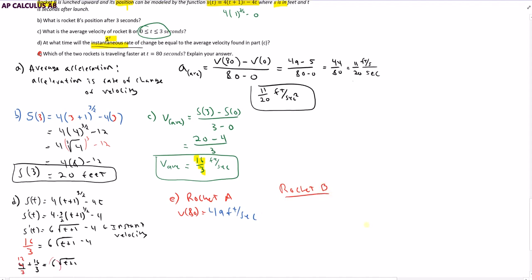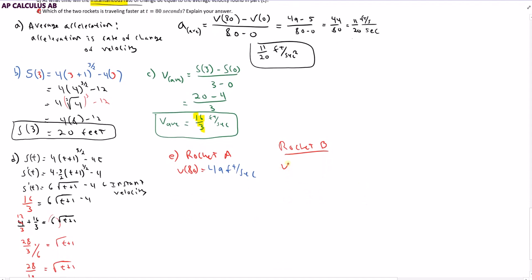How do I figure out the velocity for rocket B? Well, I use the velocity function. I should put a little A down here, velocity of rocket A. Velocity of rocket B at time T is that derivative thing we had, which was 6 square root of (T + 1) minus 4. And at 80, it's going to be 6 square root of 81 minus 4, which is 6 times 9 minus 4, which is 54 minus 4, which is 50 feet per second.